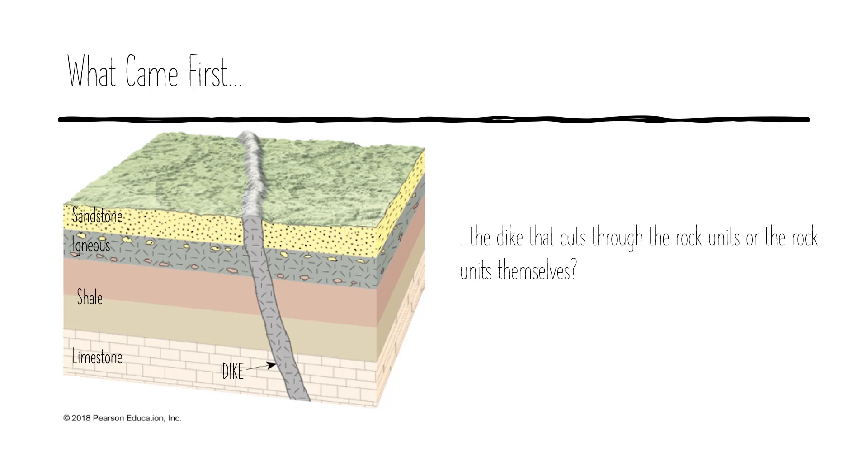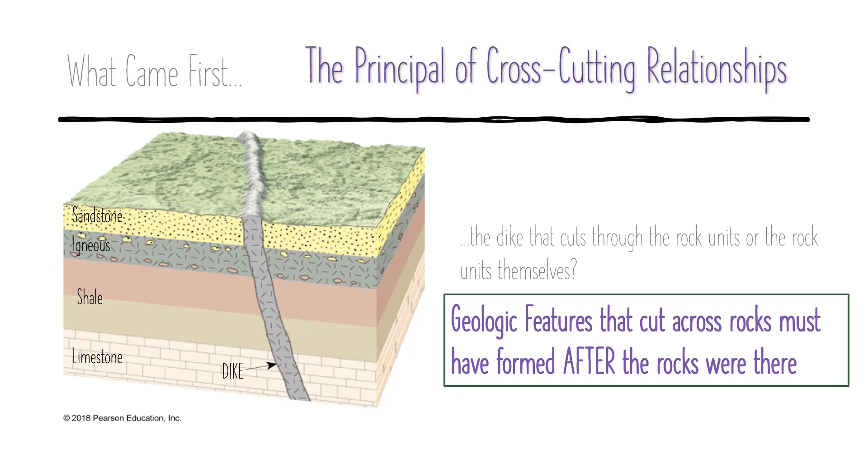But now let's take a look in a more complicated situation. Here we have four rocks: limestone, shale, igneous rock, and sandstone. Now using the principles of superposition, we know that the limestone is the oldest and the sandstone is the youngest. But what do you think about this dike that's cutting through them? Do you think the rocks formed first or do you think the dike formed first?